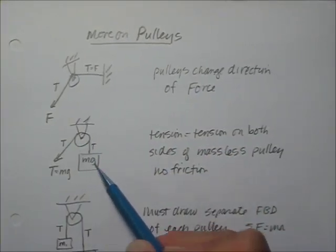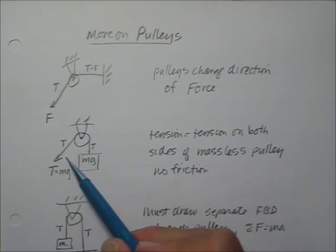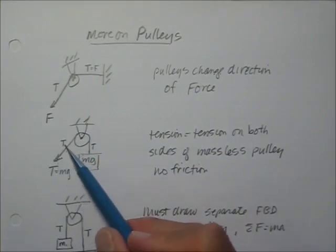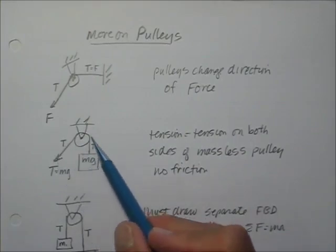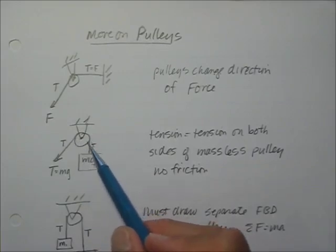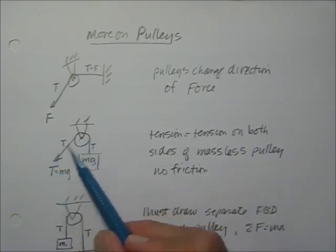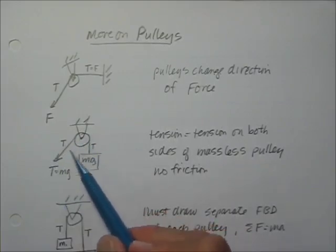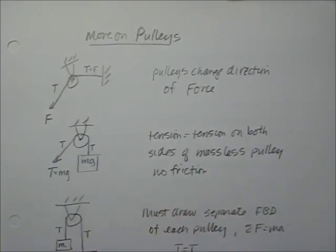Same thing if you have a mass instead of a tension. If you've got something pulling here and there's a tension, the tension is going to be the same on both sides of the pulley, and the angle doesn't make any difference because the pulley just changes the direction of the force — it just changes the direction of the tension.